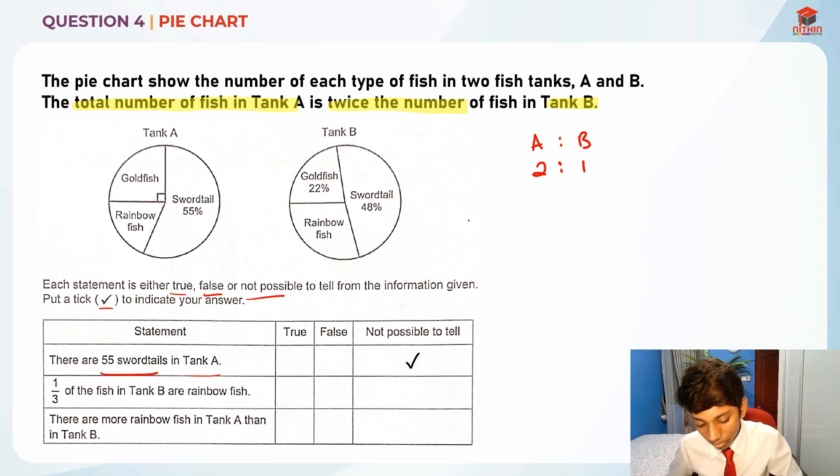Next: one third of the fish in tank B are rainbow fish. Is this statement true? One third of the fish in tank B are rainbow fish. So what do we need to have one third? Let's take 100 percent.